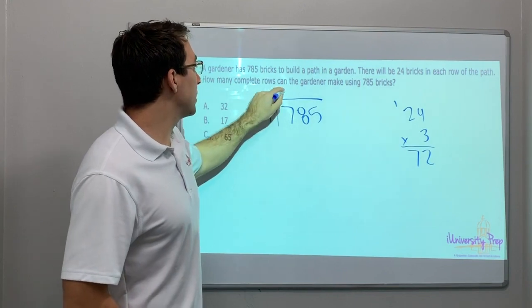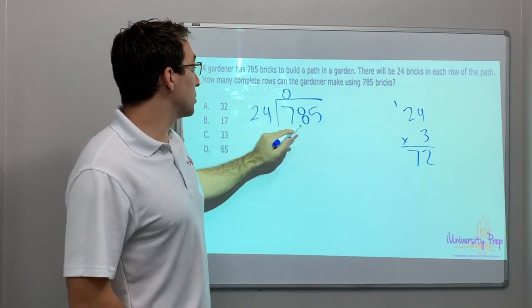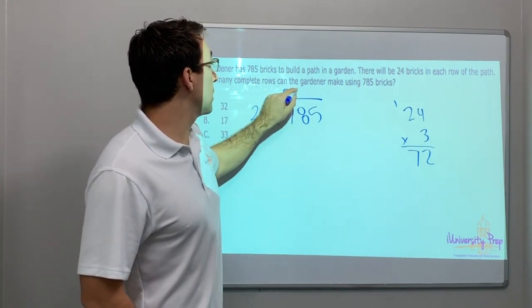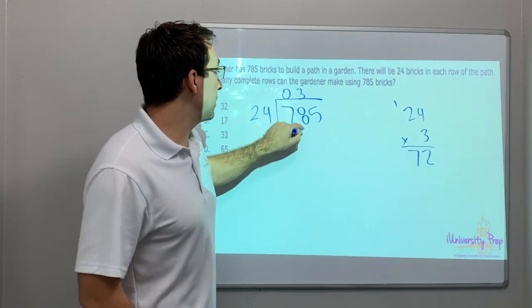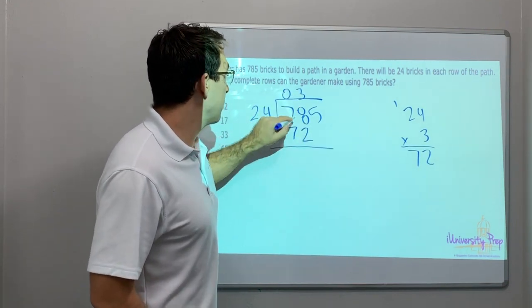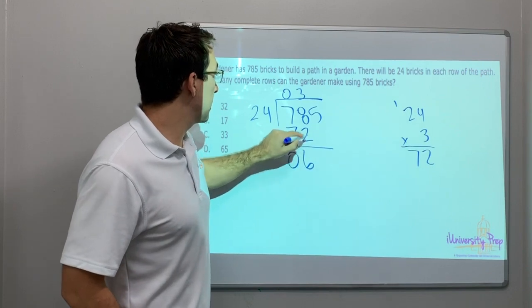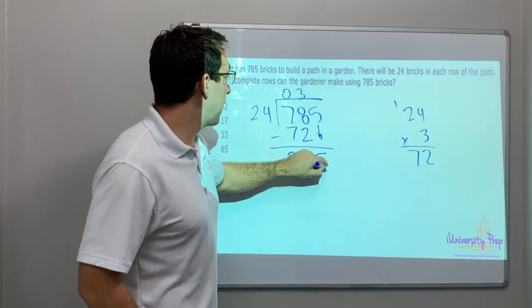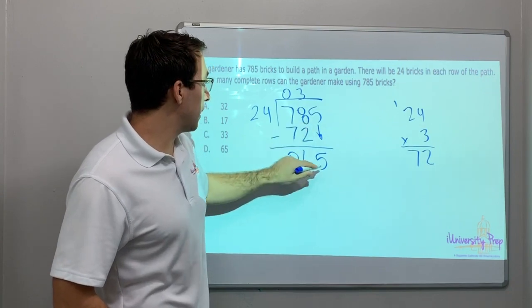So 24 does not go into 7. 24 goes into 78. And it goes into 3 times. And that is 72. So we minus 6, 65. Because we brought down our 5.